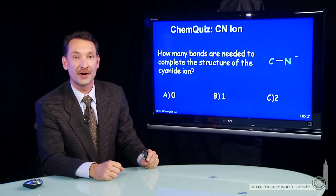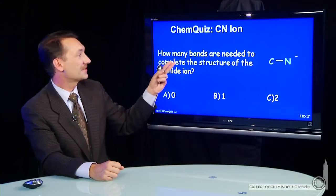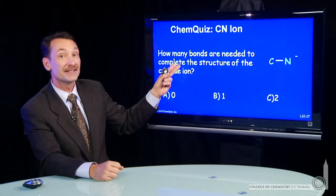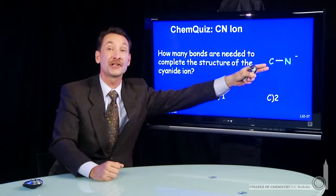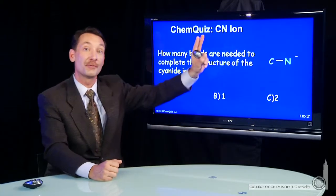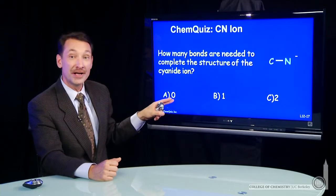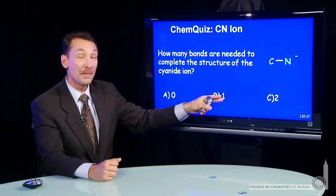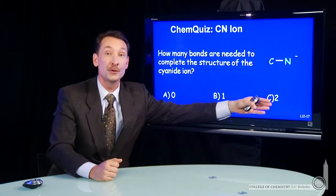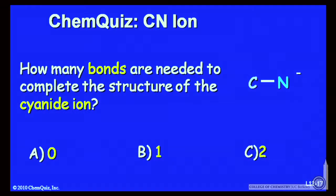Let's continue writing Lewis electron dot structures. The cyanide ion, CN minus, is written down partially here. Or is it partial? Are there no bonds required to complete it, one bond required to complete it, or two bonds required to complete it? Think about that for a minute and make a selection.